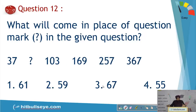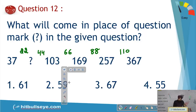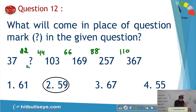Number series question: 37, ?, 103, 169, 257, 367. Starting from known terms: 169−103=66, 257−169=88, 367−257=110. The differences increase by 22 each time: 66, 88, 110. So the difference before 103 should be 44, and before that 22. Thus the missing term = 37 + 22 = 59. Check: 59 + 44 = 103. Correct.